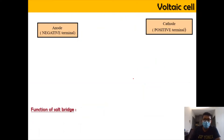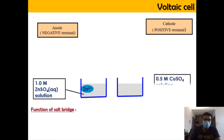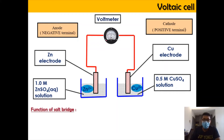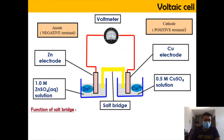To draw the voltaic cell, first we're going to have two beakers containing 1 M zinc sulfate and 0.5 M copper sulfate solution. In each electrolyte, there are two electrodes: a zinc electrode and a copper electrode respectively. These two electrodes are connected by a copper wire with a voltmeter attached. As electrons are released from anode to cathode, the voltmeter reading increases from 0 to, for example, 2 volts.